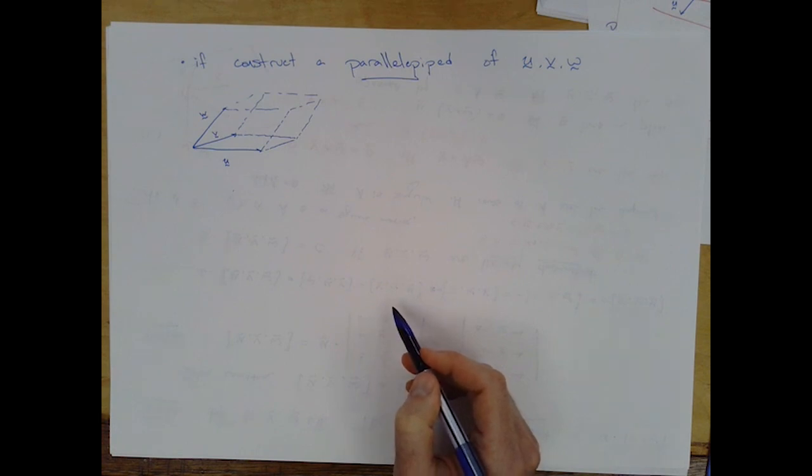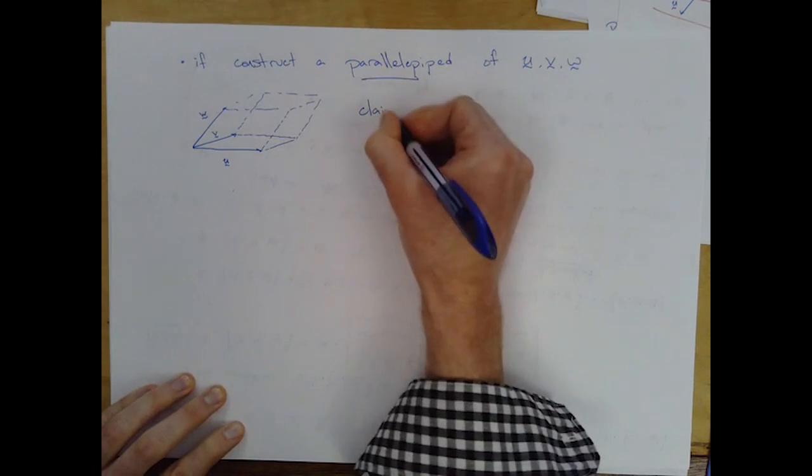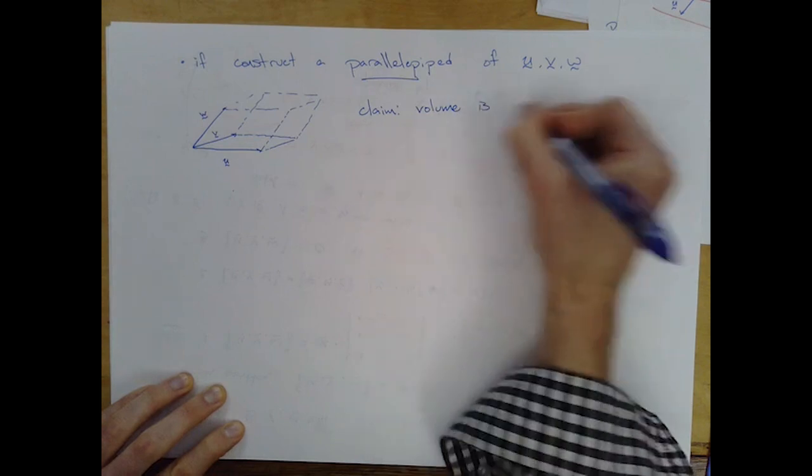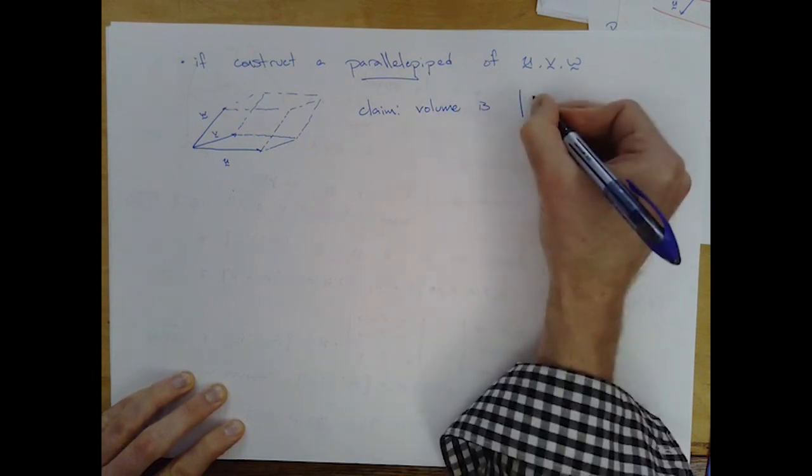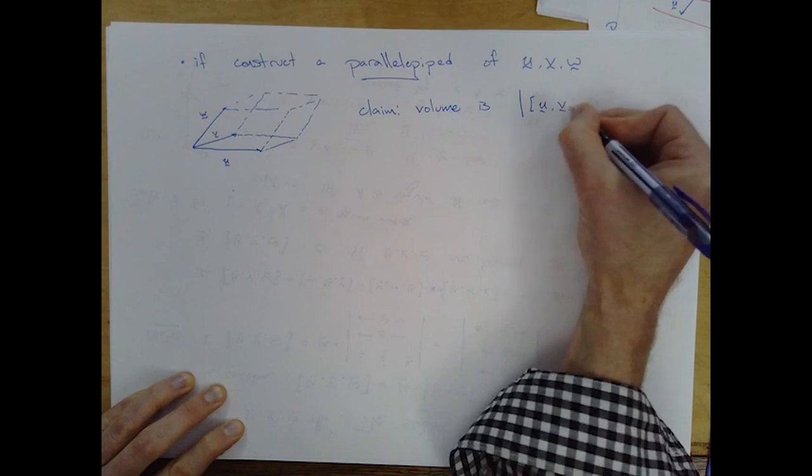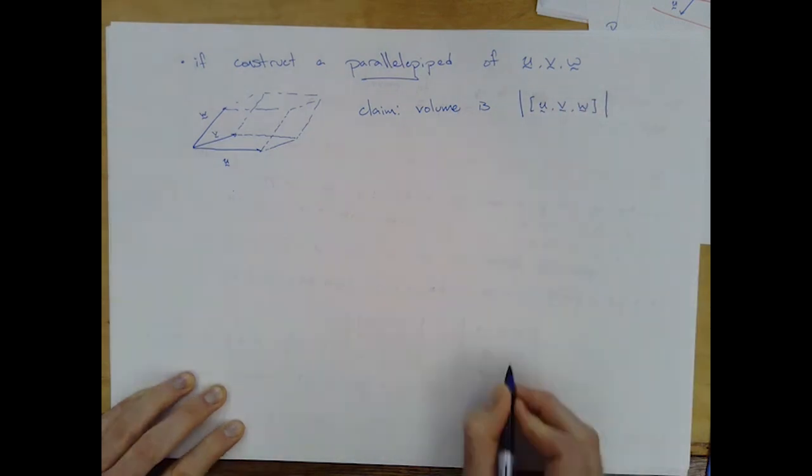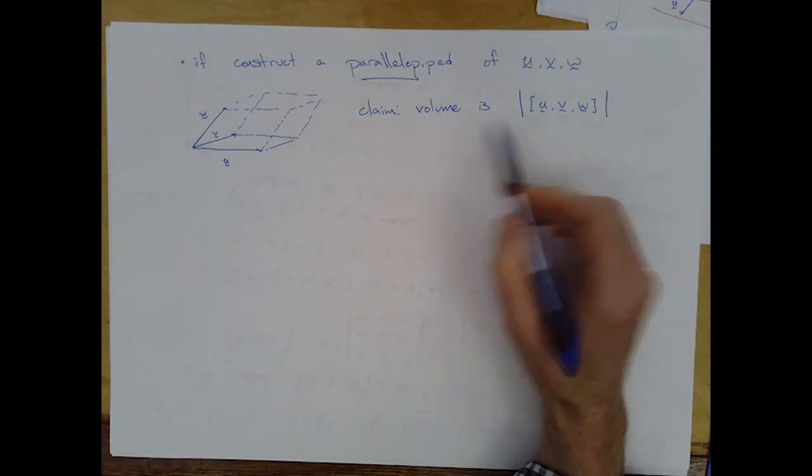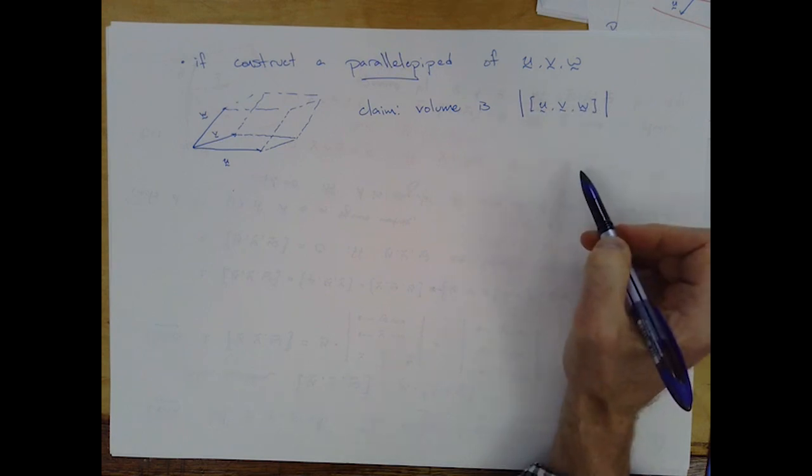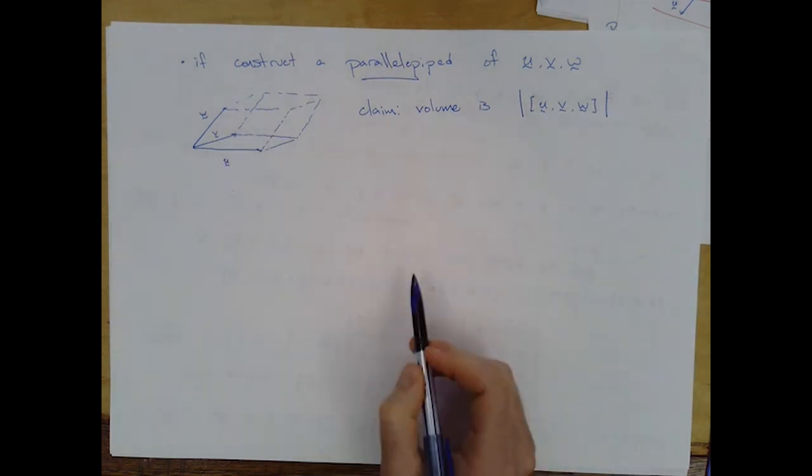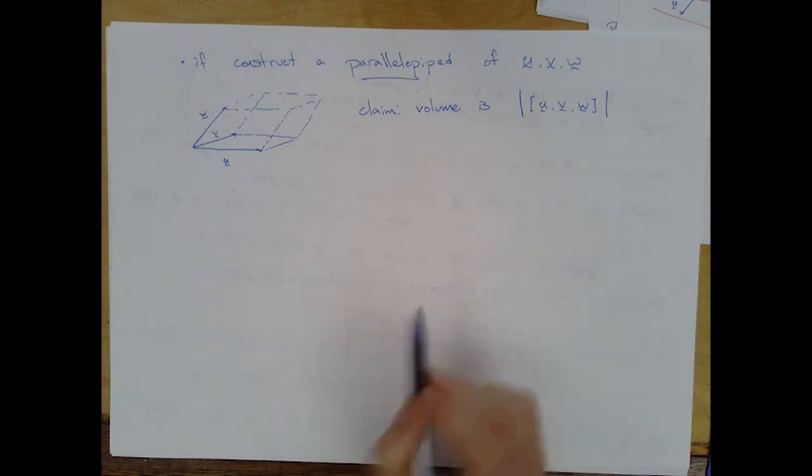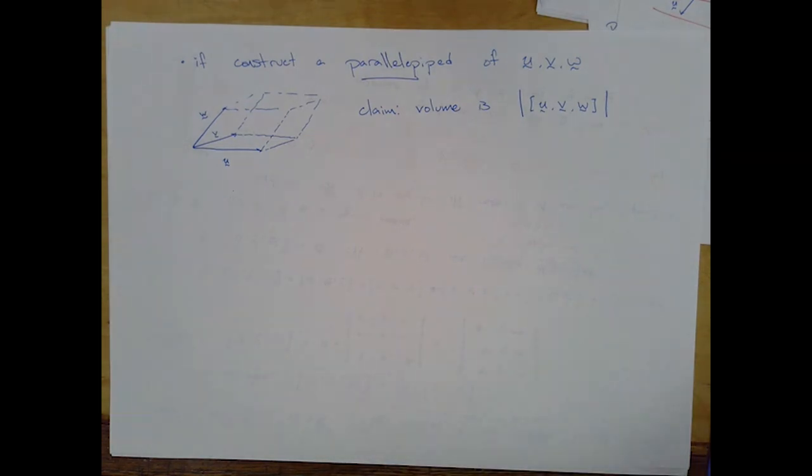All right, so the statement is that the volume of the parallelopiped is equal to the absolute value of the scalar triple product u, v, w. And important to remember that absolute value—if I didn't have the absolute value, then somehow the volume would depend on which order I took the scalar triple product. But of course, the volume of the parallelopiped doesn't care about the order of this operation, and it needs to come out positive. So we always have that absolute value there. Okay, to show this, we're going to do two steps.